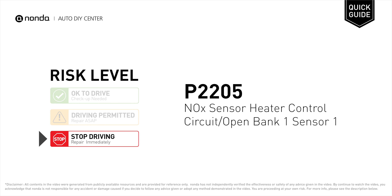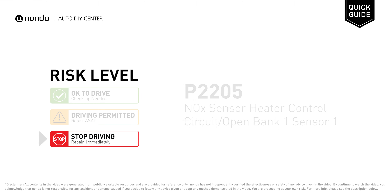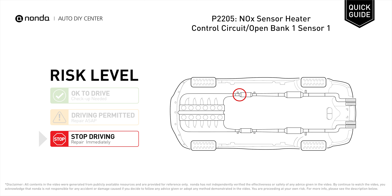P2205 is a diagnostic trouble code for NOx sensor heater control circuit open, bank 1 sensor 1. Under this circumstance, stop driving and repair your vehicle immediately. It indicates that the ECM has detected an open or general malfunction within the NOx sensor heater control circuit on bank 1.